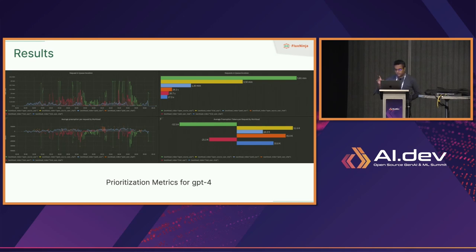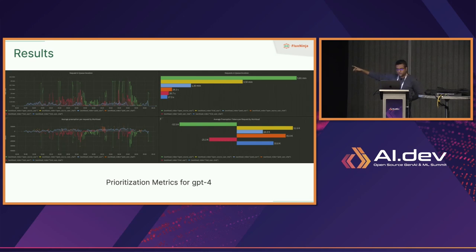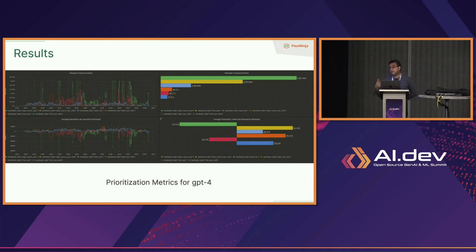Red lines are trial users — paid users are prioritized over trial users, and open source users get the lowest priority. The small orange blips in the chart represent chat — when someone asks the AI a question, that gets the highest priority with hardly any wait. This way they were able to take AI to production without putting a waitlist on their product, while still maintaining a great user experience with this queuing technology.